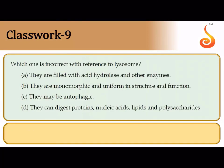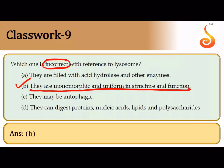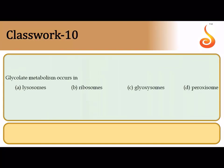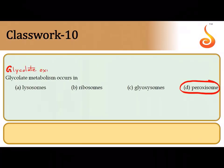Which statement about lysosomes is incorrect? That they are monomorphic and uniform in structure and function — this is incorrect, because lysosomes evolve: from primary lysosome to heterophagosome, then to a residual body containing only waste, which is expelled by exocytosis. Lysosomes are therefore polymorphic. Glycolate metabolism occurs in peroxisomes, which contain an enzyme called glycolate oxidase that participates in a pathway producing hydrogen peroxide from oxygen.